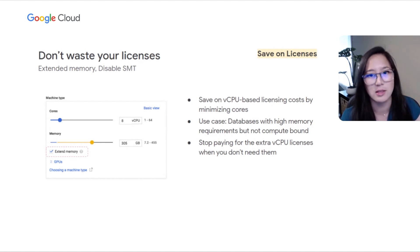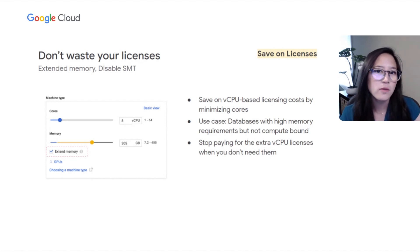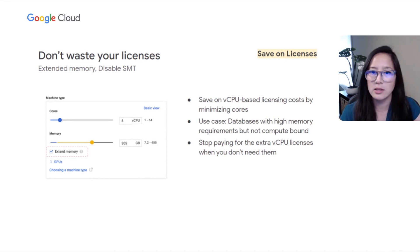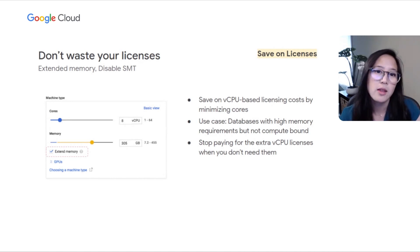Another way to save on licenses is disabling simultaneous multithreading, or SMT. By default, SMT is enabled on VMs so a single physical CPU core runs two virtual CPUs as separate threads. Disabling SMT reduces the number of vCPUs per core from 2 to 1, which can reduce your costs. For multi-tenant per-vCPU workloads on Compute Engine, this can result in significant savings on total VM costs for many enterprise workloads.